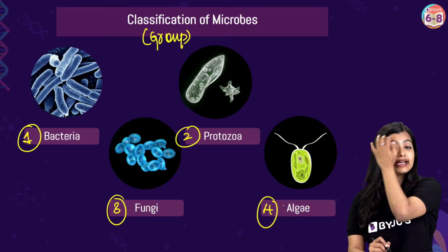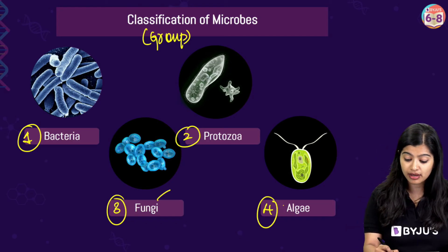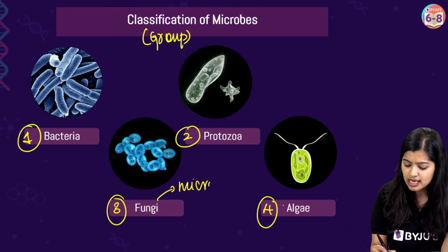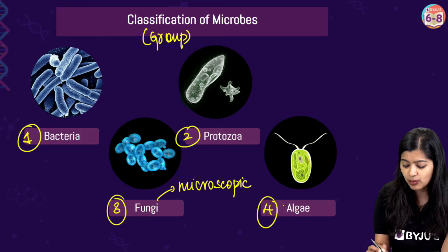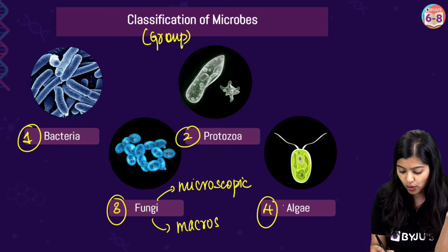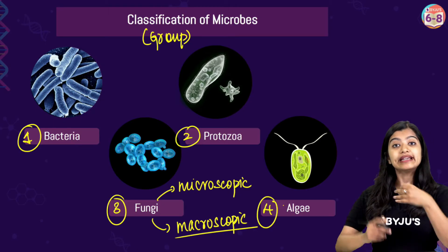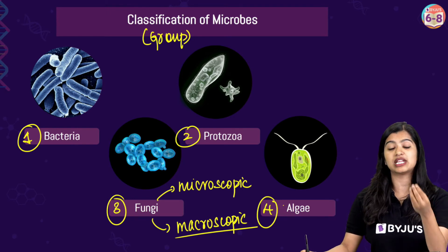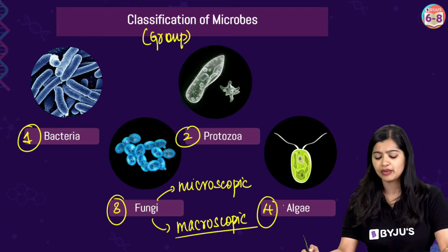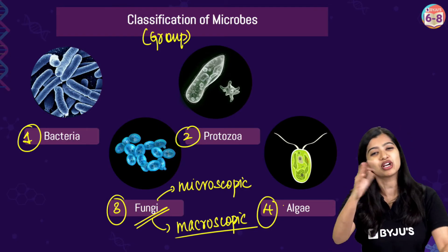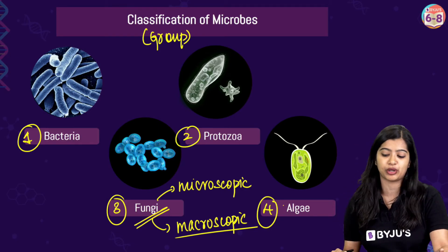Now, the thing with fungi is that some of them are microscopic, meaning some of them we cannot see with our naked eye, while some are macroscopic. If you take the mushroom, these are organisms that we can see with the naked eye. This is one thing about fungi that you need to understand, because this is where things can get slightly tricky.